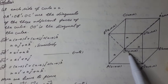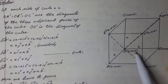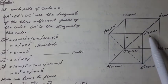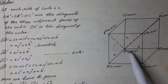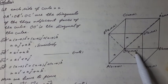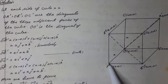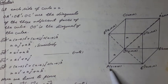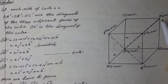Therefore, O has coordinates (0, 0, 0) and O' has coordinates (A, A, A). A has coordinates (A, 0, 0) and A' has coordinates (0, A, A).